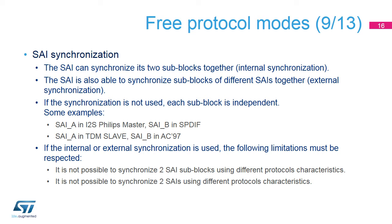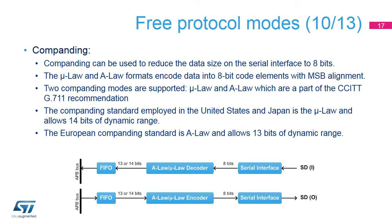The internal synchronization can be used for communications needing two data lanes, such as full-duplex I2S. The external synchronization can be used for communications needing more than two data lines, up to four, for example when interfacing HDMI ICs. All the sub-blocks synchronized together must use the same protocol characteristics.